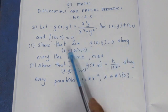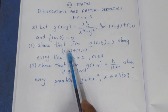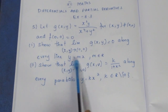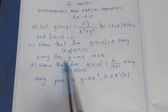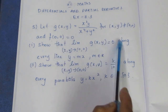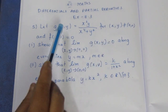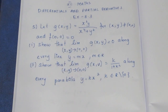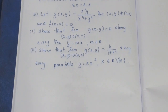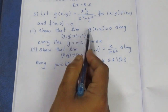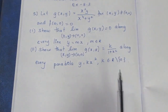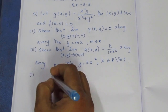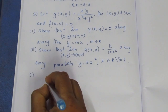The limit as (x,y) tends to (0,0) along every line y equal to mx. We substitute y equal to mx. In the first subdivision, we will take the limit as (x,y) tends to (0,0).